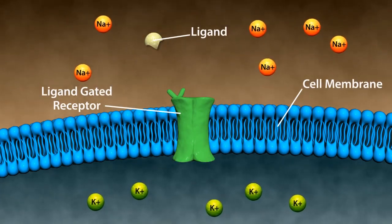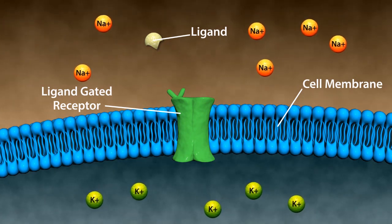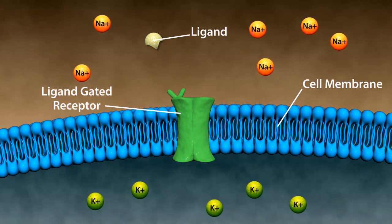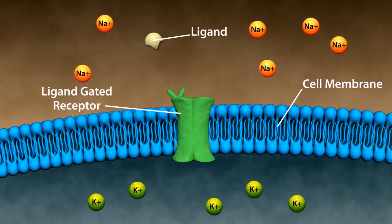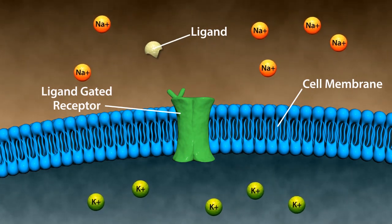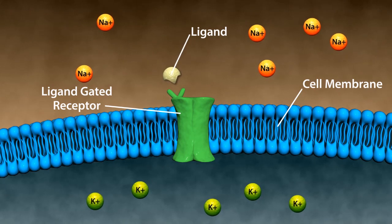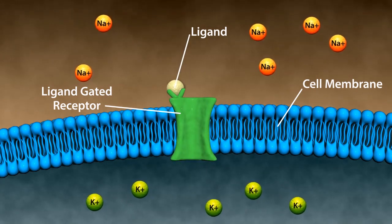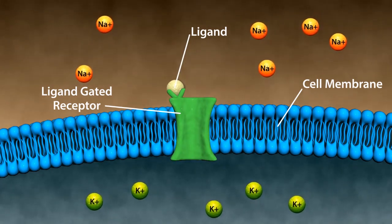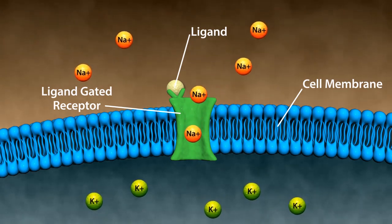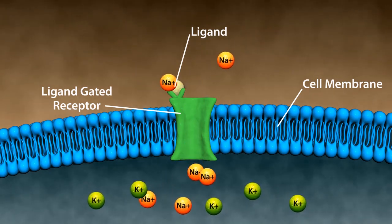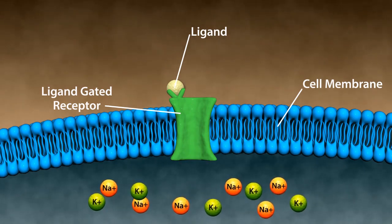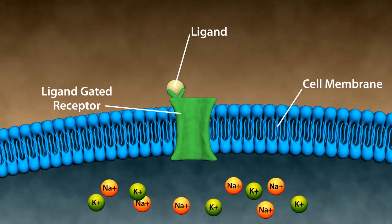In ligand-gated receptors, the cell membrane requires specific ligand-gated channels for movement of hydrophilic molecules through it. First, the ligand binds to the receptor, then the receptor gate opens. For example, acetylcholine binding to nicotinic receptors. In this example, sodium enters the cell and an electrochemical gradient is created, resulting in depolarization.